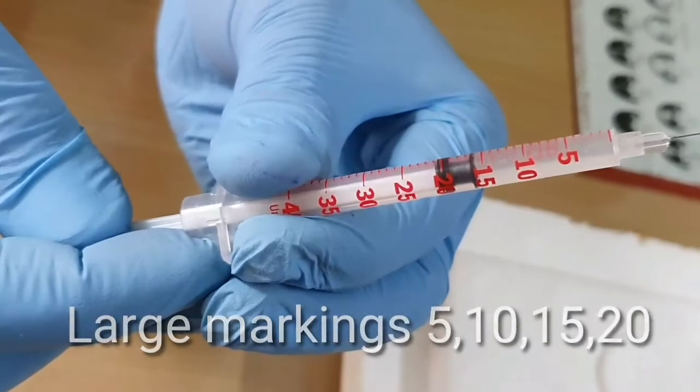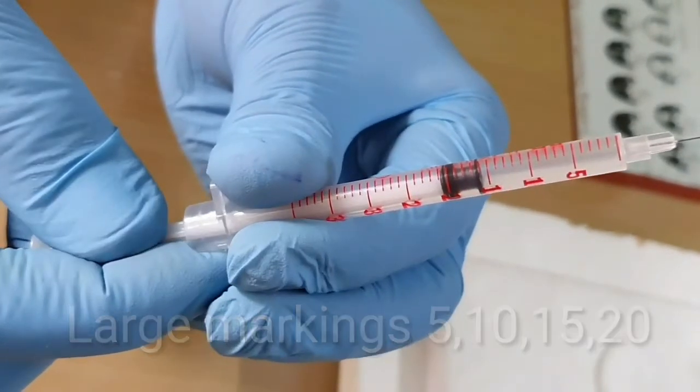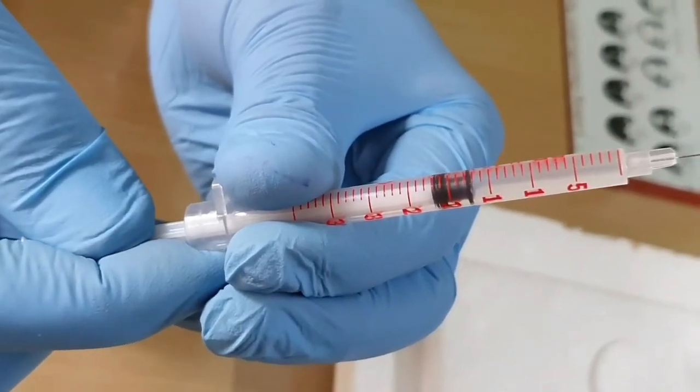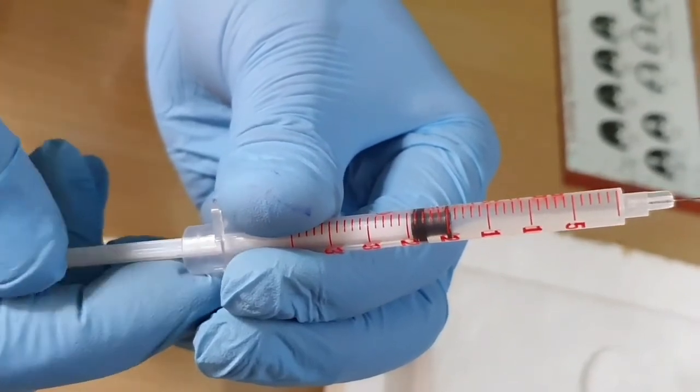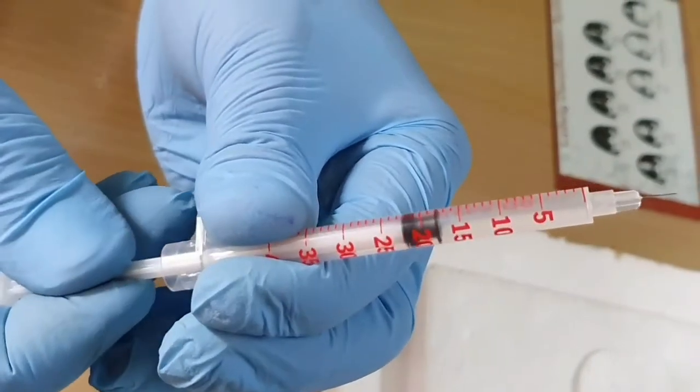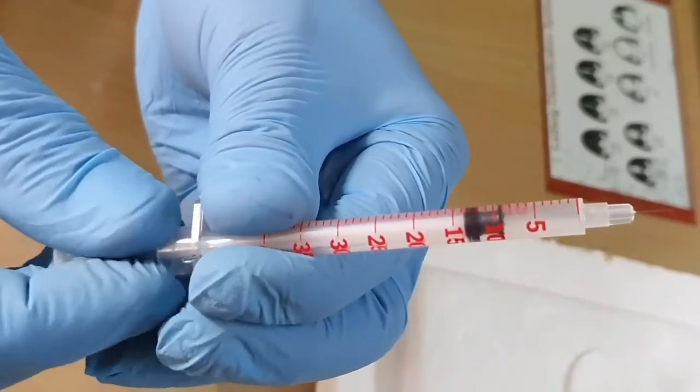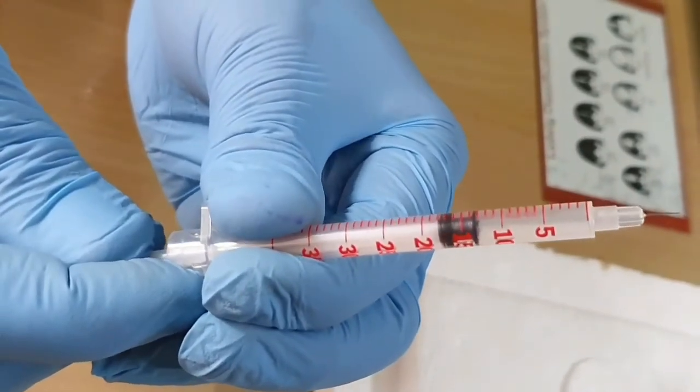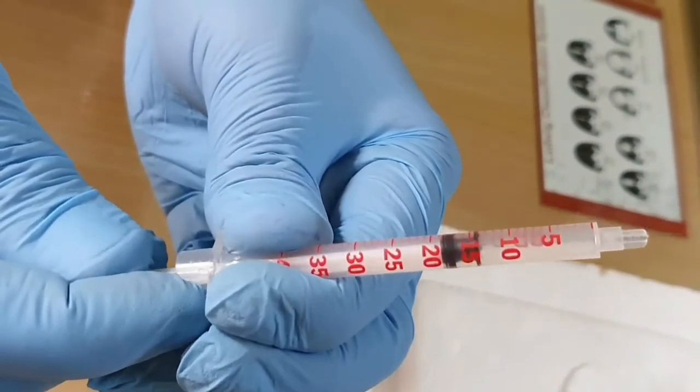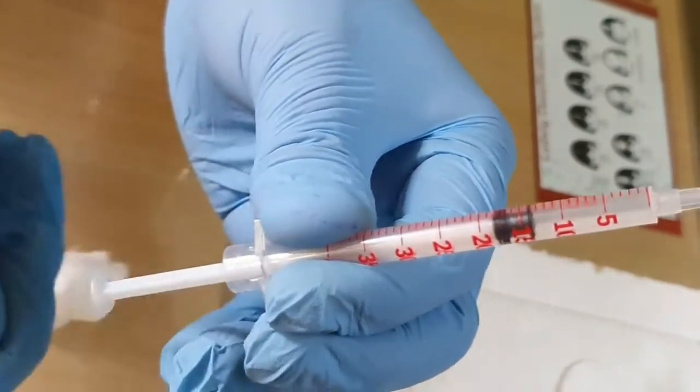Now we have the 16 mark, 17 mark, 18, 20 like that. Suppose we are going to inject 14 units, we have to withdraw air first initially. See, I have kept it at the 14 mark: 10 plus 4 smaller markings.